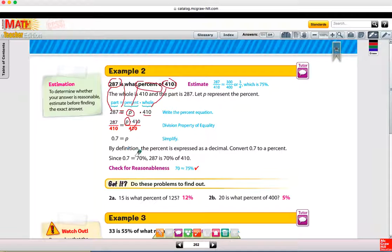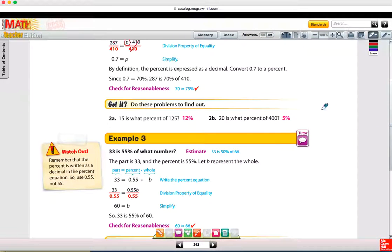P times 410, if we want to isolate the variable, we're going to divide both sides by 410. And we get that P is equal to 0.7. But remember, we're trying to find the percent. So 0.7 is equal to 70%. Let's take a look at these two examples. 2a: 15 is, so that's 15 equals what percent, I can use a P or I can use an X, it doesn't matter, of means to multiply, and then 125. If I want to isolate the variable, I'm going to divide both sides by 125. When I take 15 divided by 125, I get 0.12, which translates to 12%.